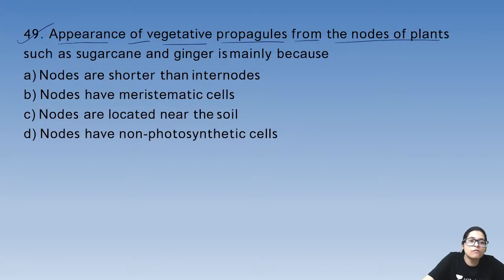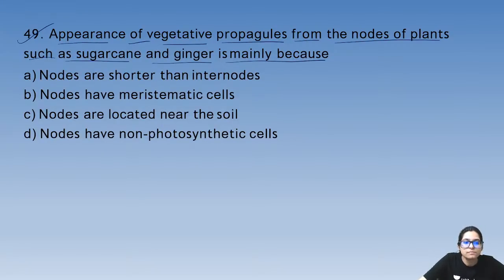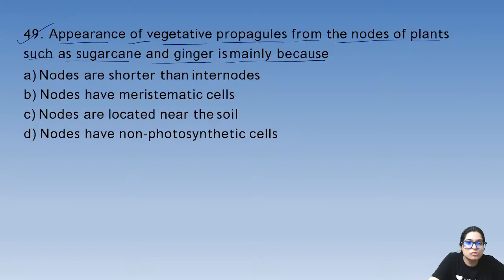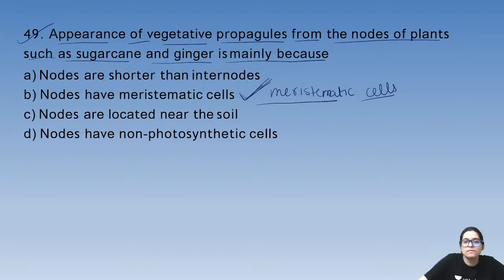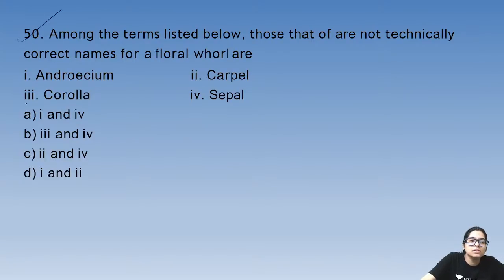Question 49: appearance of vegetative propagules from the nodes of plants such as sugar cane and ginger is mainly because nodes contain meristematic cells. These meristematic cells divide to form vegetative propagules.